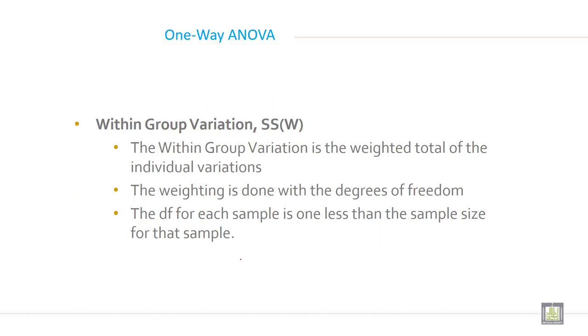Within group variation. The within group variation is the weighted total of the individual variations. The weighting is done with the degrees of freedom. The degree of freedom for each sample is one less than the sample size for that sample.